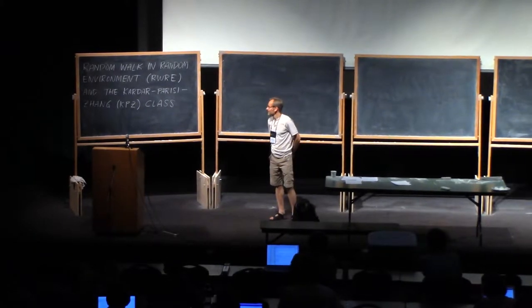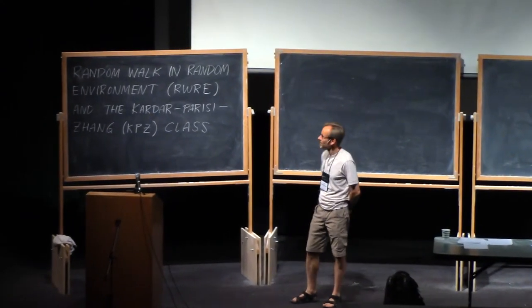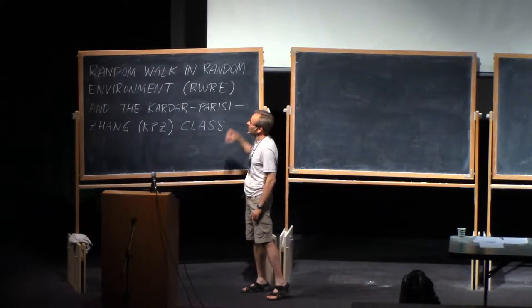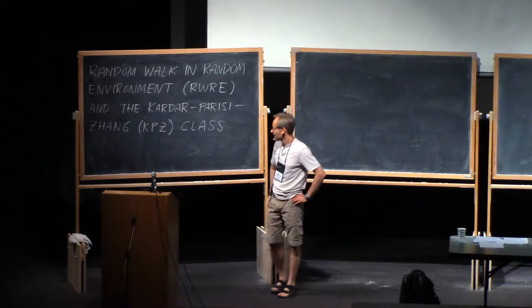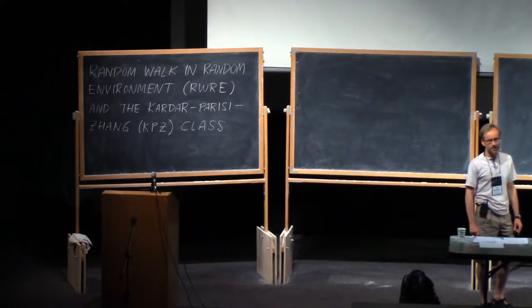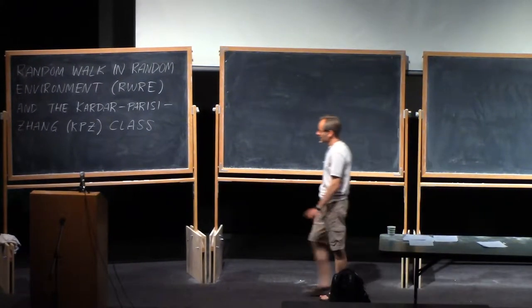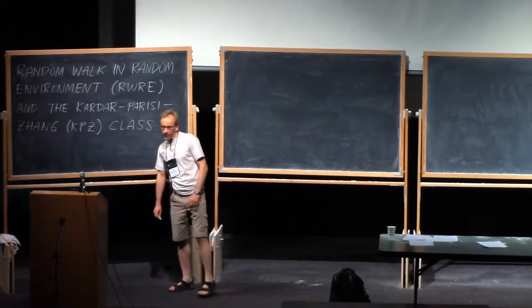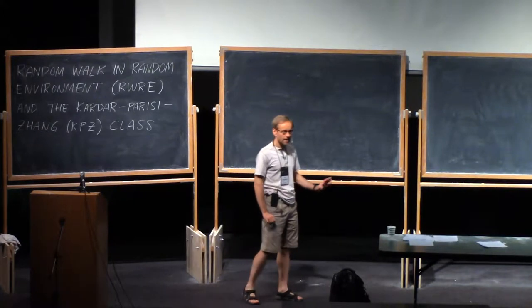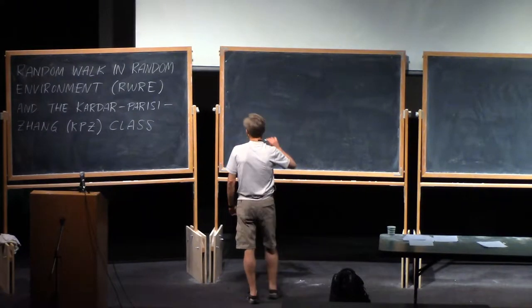So, this talk is coming slightly off the field. It's from the area of motion in a random medium, where one of the benchmark models that have been studied for a few decades is this RWRE model, Random Walk in Random Environment. And in recent years, this class of models has been linked with the KPZ class that Jeremy began to discuss yesterday. So, let me begin by giving brief statements of the theme of this talk, mainly to the experts, and then I'll back up and go to square one and start with definitions.